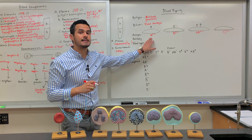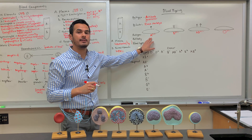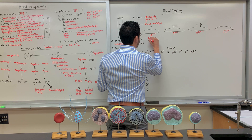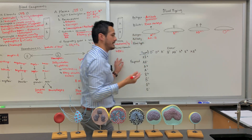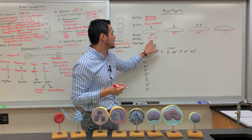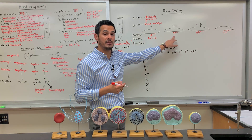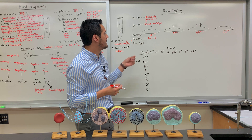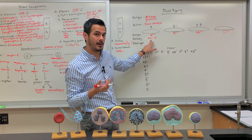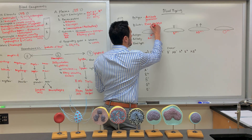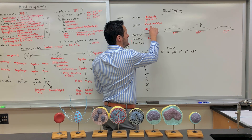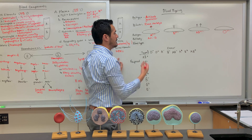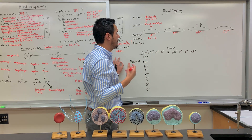For someone that is type A blood, they're going to have what we call anti-B antibodies, meaning that if you give someone that's type A blood some type B blood, then a reaction can occur. This makes sense because if type A blood had anti-A antibodies, that antibody would bind to the antigen on the surface of its own red blood cells, and this is not a good thing — we don't want this to happen.